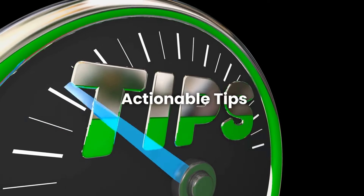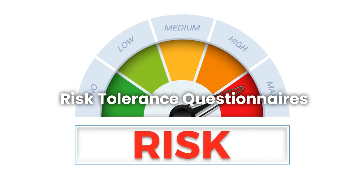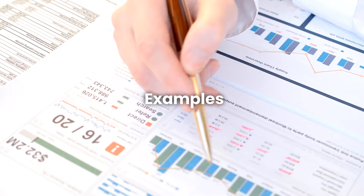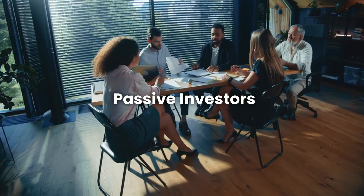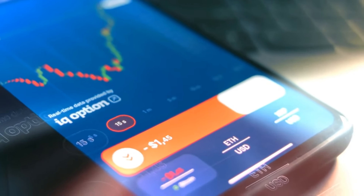To identify your investor type, use risk tolerance questionnaires to assess your comfort level with risk, and self-assessment tools to evaluate your time availability, financial knowledge, and interest in active trading. For example, passive investors may prefer automated investment platforms or robo-advisors, while active investors might enjoy stock trading apps and financial news subscriptions. This structured approach helps you identify your investor type and understand how it shapes your investment strategy.